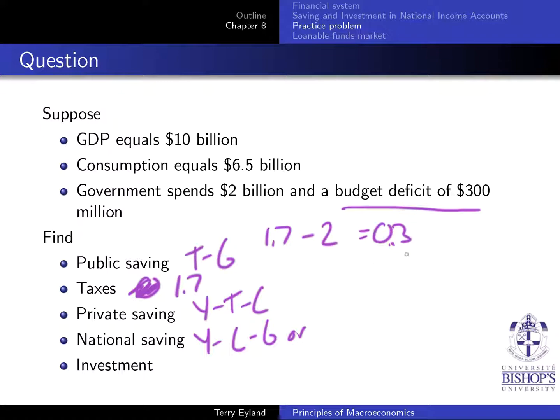Public saving is negative $0.3 billion. Make sure that this budget deficit is referred to as negative.